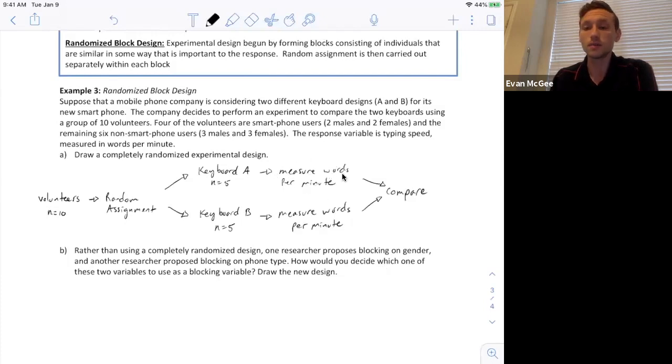The response is the measure or the amount of words they can type per minute. So it doesn't make sense or it's not smart for us to compare non-smartphone users with smartphone users because this variable, the phone that they use, will influence already their typing speed, the response variable.